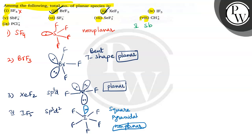Number 5 is SF4 minus. So SP3D hybridization. So one position occupied by the lone pair, seesaw structure.